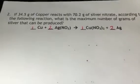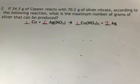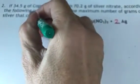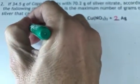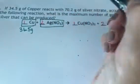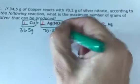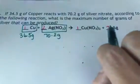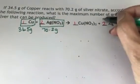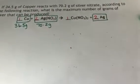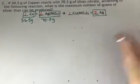The next step is to identify what I have and what I'm going to use. They're telling me that I have 34.5 grams of copper and 70.2 grams of silver nitrate. The question asks: what is the maximum number of grams of silver that can be produced? So I need to calculate the molar masses of those three particles.